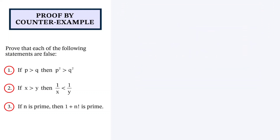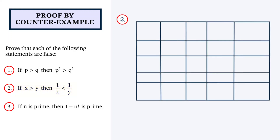Now let's look at question 2. If x is greater than y, then 1 over x is less than 1 over y. Let's create a table of values with columns x, y, 1 over x, 1 over y, and whether the statement is true or false. Let's try x is equal to 2 and y is equal to 1. So 1 over x is a half and 1 over y is equal to 1. This is true because 2 is greater than 1 and a half is less than 1.